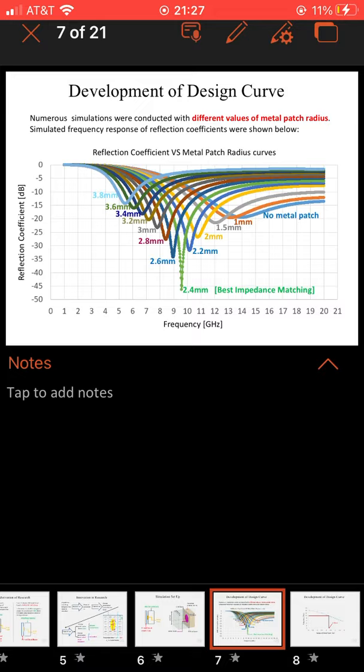Development of the design curve: Numerous simulations were conducted with different values of metal patch radius. Simulated frequency response of the reflection coefficients are shown below. As you see, we have gigahertz and dB. As you see in the graph, from zero metal patch it goes from no metal patch to 3.8 millimeters. 2.4 is the best impedance matching.